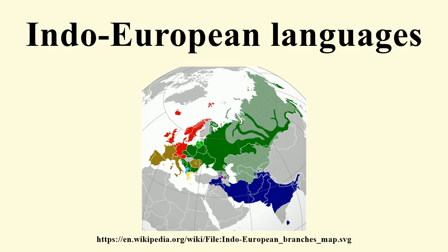A synonym for Indo-European, Indo-Germanic, defines the family by specifying its south-easternmost and north-westernmost branches. In most languages this term is dated or less common, whereas in German it remains the standard scientific term. Advocates of Indo-Germanic see Indo-European as misleading because many historic and several living European languages do not belong to this family, while advocates of Indo-European regard Indo-Germanic as misleading because many European languages included are not in fact Germanic. Franz Bopp's comparative grammar appeared between 1833 and 1852 and marks the beginning of Indo-European studies as an academic discipline.